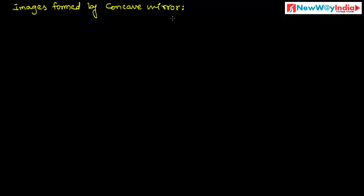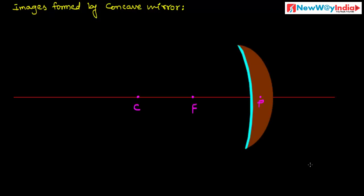Let us discuss about images formed by a concave mirror and what are the characteristics of images. Consider a mirror. This is a concave mirror because the inward side is the polished surface and the outward side is the covered surface.